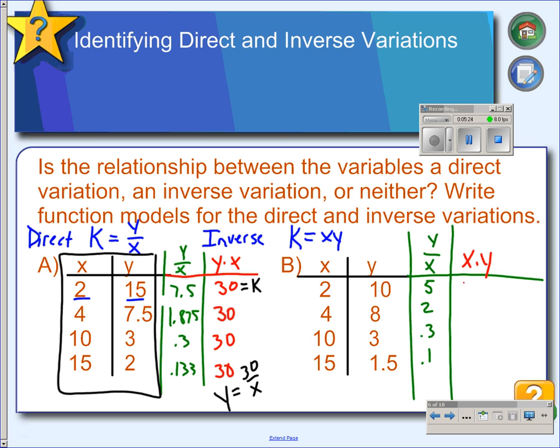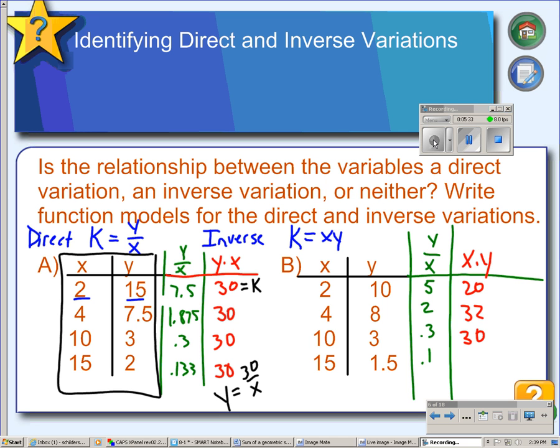So 2 times 10 is 20. 4 times 8 is 32. 3 times 10 is 30. And 15 times 1.5 is 22.5.